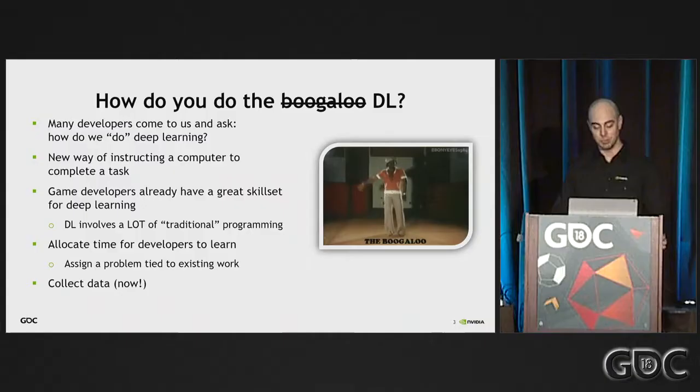What a lot of online courses miss is that traditional programming forms a huge part of the practicality of actually rolling deep learning out. You have to put your data set somewhere, preprocess it, load it into memory, and make sure byte ordering is correct. As game programmers, we know how to optimize for RAM usage, look for hotspots in code, and make things run faster. Fear not — a lot of the skills you already know are highly applicable.